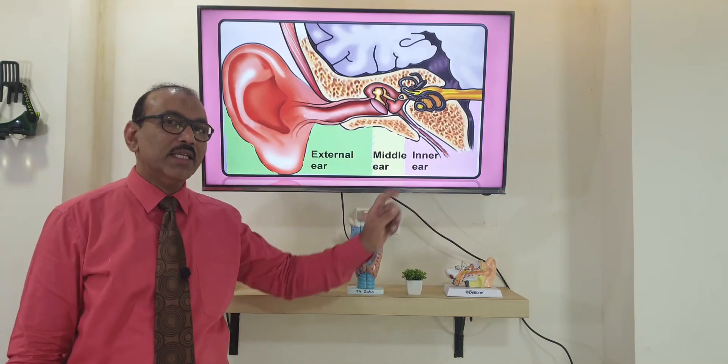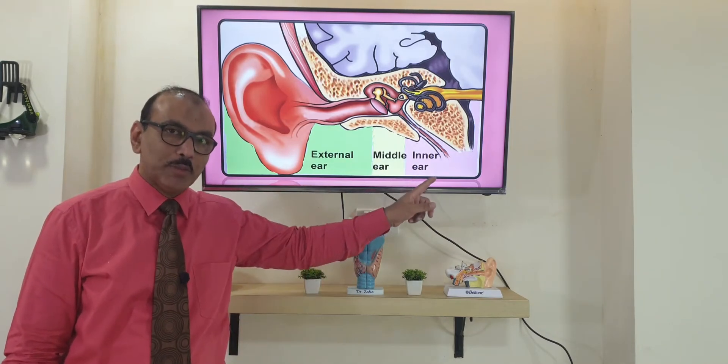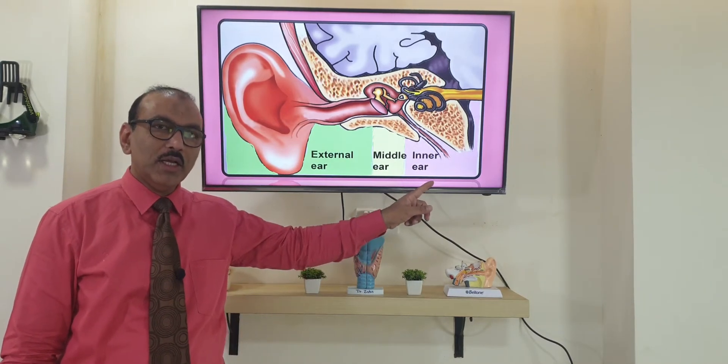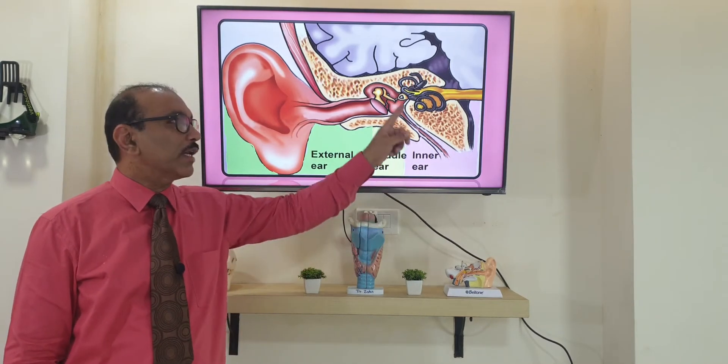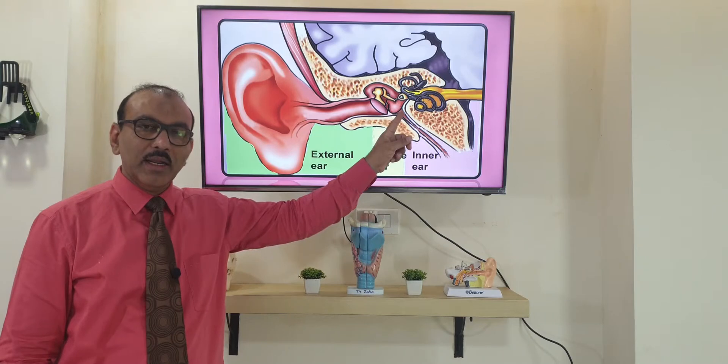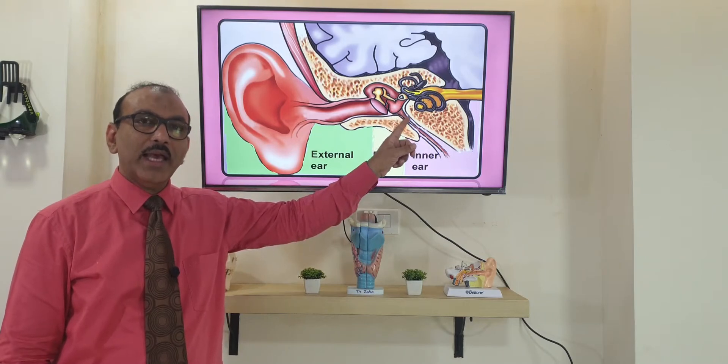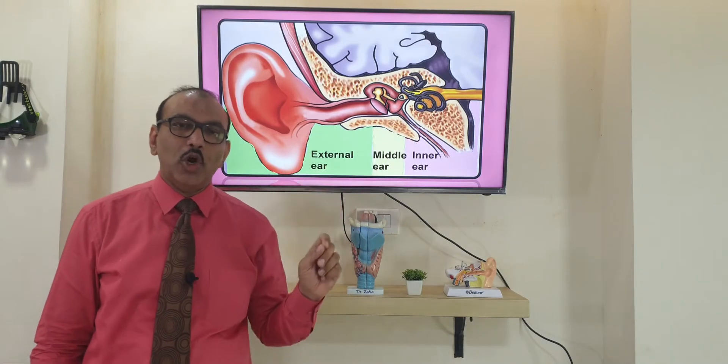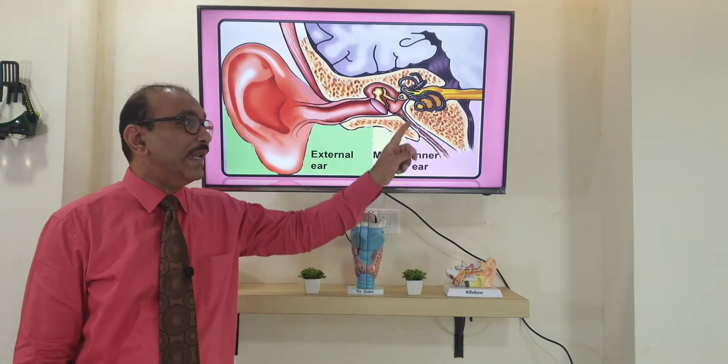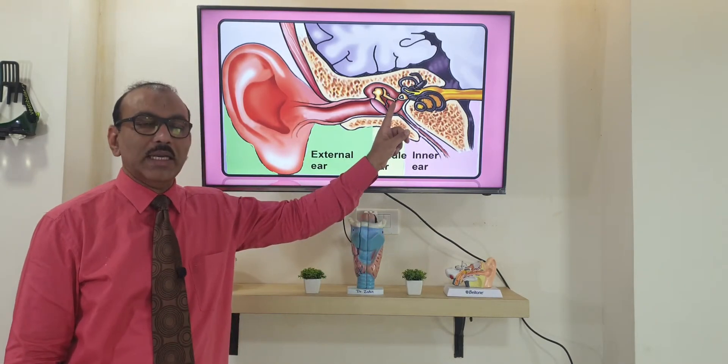If for any reason the Eustachian tube is blocked, air cannot reach the middle ear, it does not function normally, and there will be negative pressure in the middle ear.